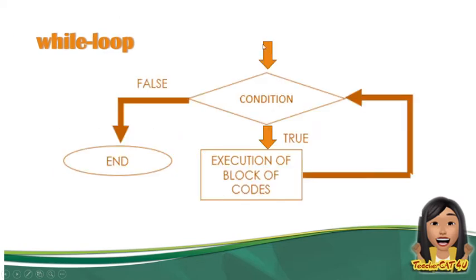Ito yung flowchart ng while loop. Pag nag-true yung condition ninyo, gagawin niya yung block of code, then babalik sa condition. Pag nag-true ulit, gagawin niya ulit yung block of code. Pag nag-false, mag-end. So, hanggang true yung condition ninyo, paulit-ulit lang niyang gagawin yung execution ng block of code.